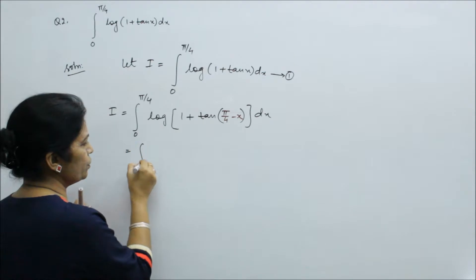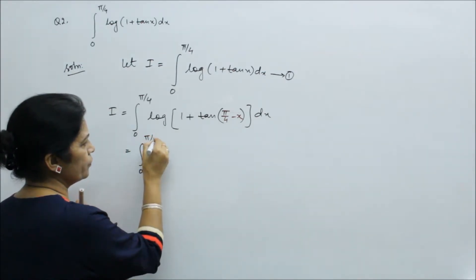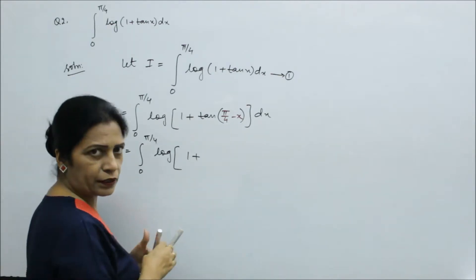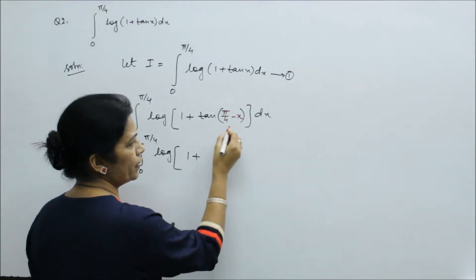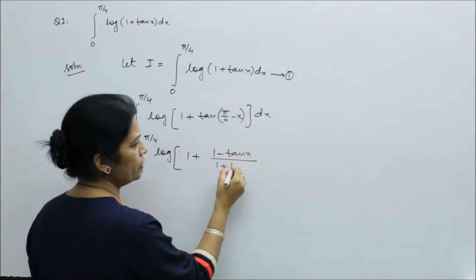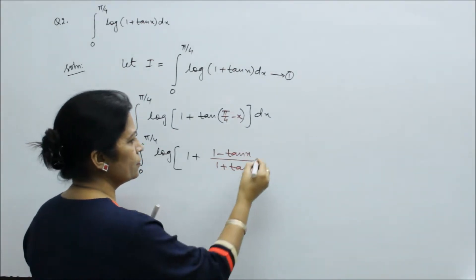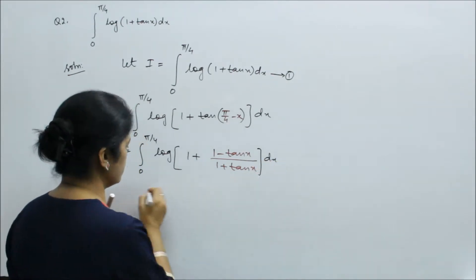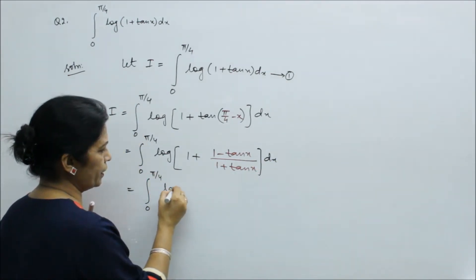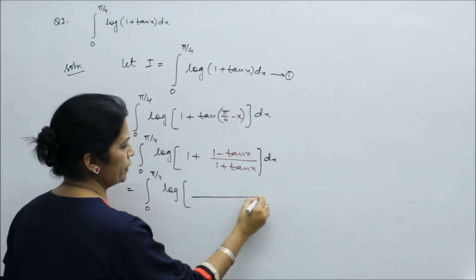So it is 0 to π by 4, log(1 + tan(π/4 - x)) dx. It is the formula tan(a - b). Tan(π/4 - x) is (1 - tan x)/(1 + tan x). So this is the formula.